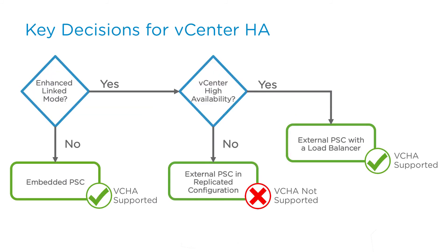There are a couple of key decisions when architecting your vCenter high availability environment. First and foremost: are you going to use enhanced linked mode? If the answer is no, there's really not much of a reason to use an external PSC, so keep it simple — use an embedded PSC. You can enable VCHA with no extra special configuration. If you would like to take advantage of enhanced linked mode, then you have to ask: am I going to use high availability as well? If the answer is no, we can use an external PSC to connect multiple vCenters together, but we would not be able to add vCenter high availability because we would lack a load balancer. If we do want to use vCenter high availability in conjunction with enhanced linked mode, then we need an external PSC along with a load balancer.